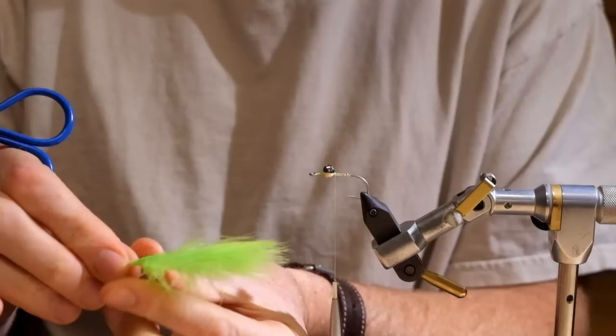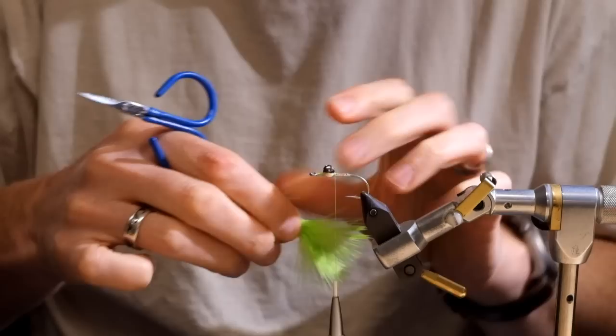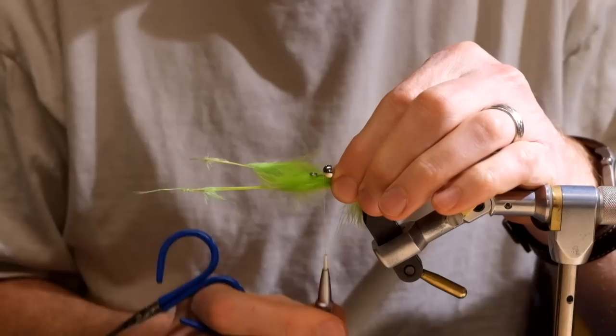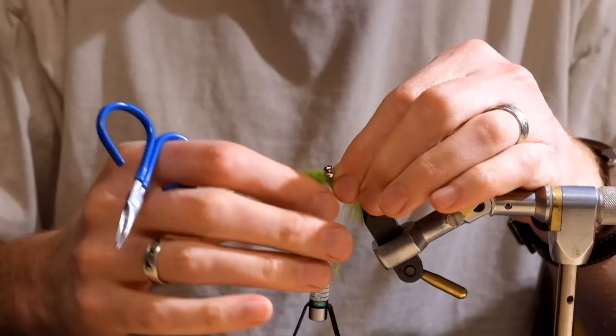And our next step is to attach the Miraboo. I've got two Miraboo feathers. They're gonna attach on the bottom of the hook and my thread is right in front of my eyes now. I want to attach them to the bottom of the hook and I want them to protrude past the bend of the hook somewhere between half and three quarters of an inch.